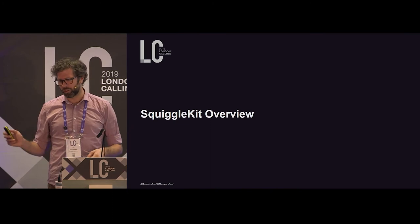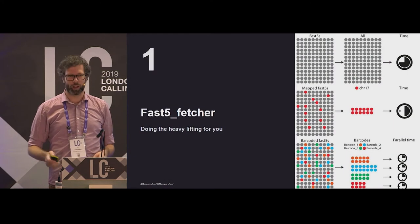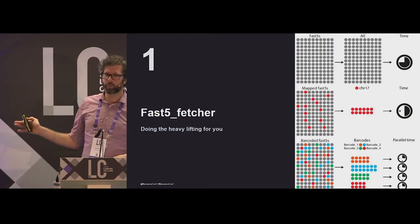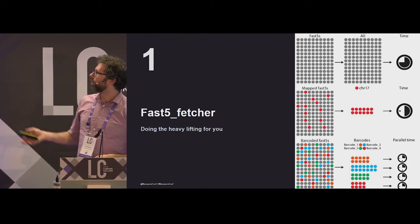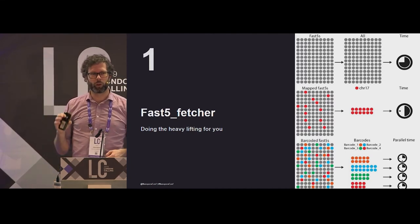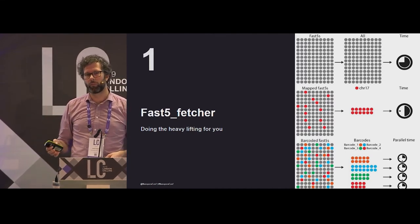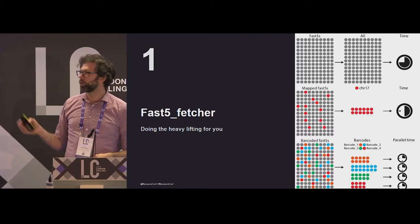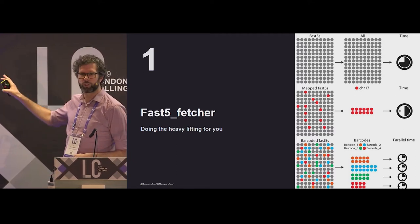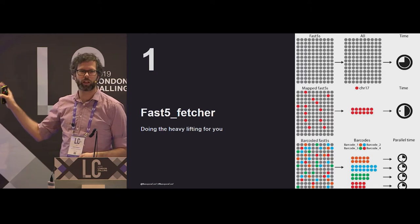So an overview of the tools a little bit more. So Fast5 Fetcher. This here is to kind of demonstrate what you'd normally do in a regular workflow. So if you have all your thousands of Fast5 files, and you wanted to say do a nanopore polishing step, which uses the signal files. Currently you'd index all the files, throw them all across to where you're going to do your analyses on say a cluster or something.